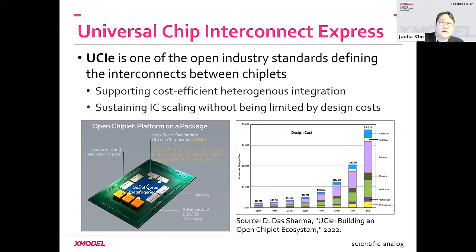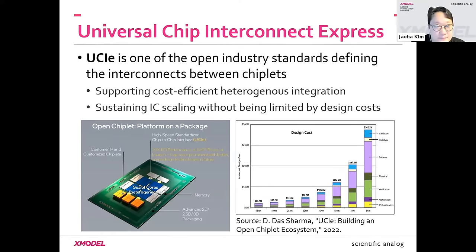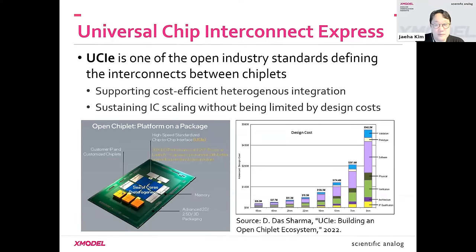One key requirement of chiplets is that they should have a standardized interface so that different chiplets from different vendors can communicate seamlessly. UCIe, the acronym for Universal Chip Interconnect Express, is one of those open industry standards that defines interconnects between chiplets. Today we'll talk about how to model them and simulate those models in SystemVerilog.